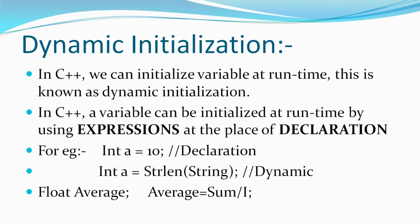Let's look at an example. Suppose we have integer a equal to 10. This is known as a declaration — we declare the variable a and assign it the value 10, which won't change throughout its lifecycle. But in C++ programming, we sometimes use dynamic initialization to make our program more efficient.